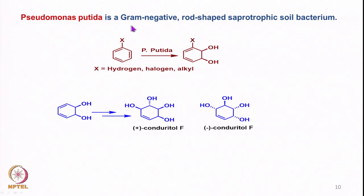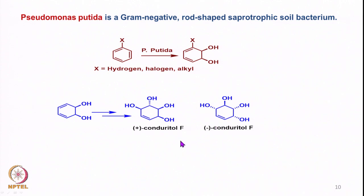Pseudomonas putida was used as an interesting gram-negative bacterium for the conversion of aromatics to diols, and this happened to be optically pure. If we have substituents other than hydrogen — such as halogen or alkyl — we can get this particular cis-diol as an optically pure compound. One of them was utilized for the conversion to optically pure glycosidase inhibitors through various transformations, and we also saw conversion of other substituted diols into important intermediates.